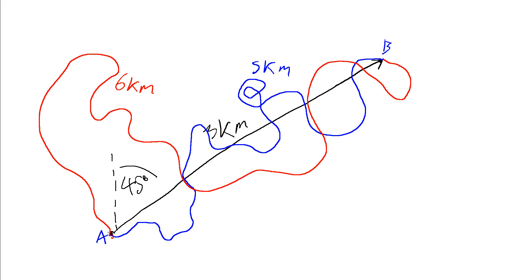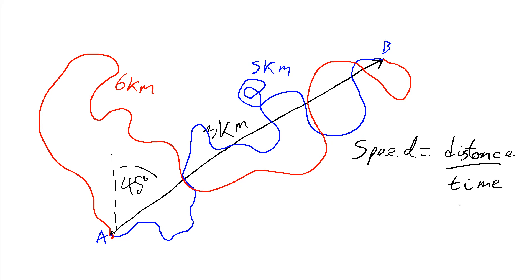So our displacement is always just the 'as the crow flies' magnitude from the starting point to the end point and in what direction, because it's a vector. Whereas the distance is how far we've actually travelled along that route. From these we can look at the difference between speed and velocity: our speed going from A to B is our distance divided by time, whereas our velocity is the displacement divided by time — the change in displacement divided by time.